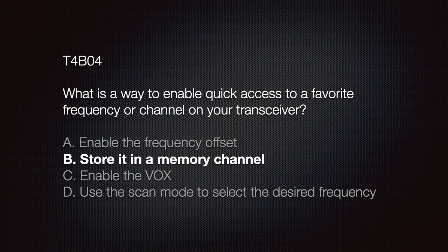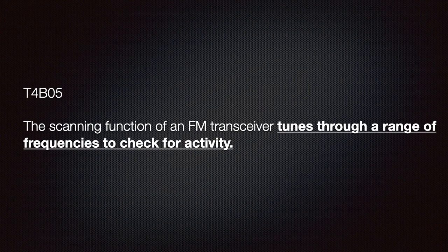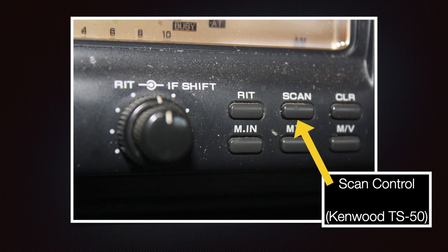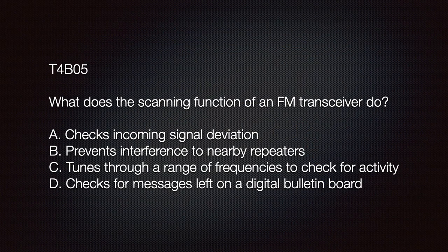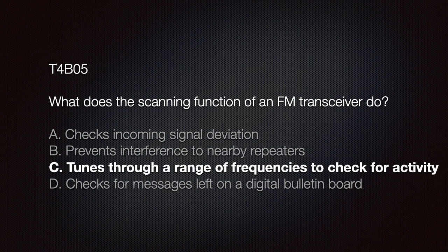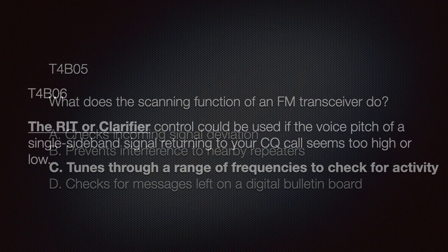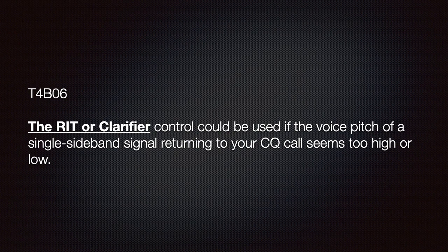The scanning function of an FM transceiver tunes through a range of frequencies to check for activity. When activated, it can scan a frequency range or through what you have stored in memory. The exam question asks what the scanning function on an FM transceiver does. The correct answer is C — tunes through a range of frequencies to check for activity.